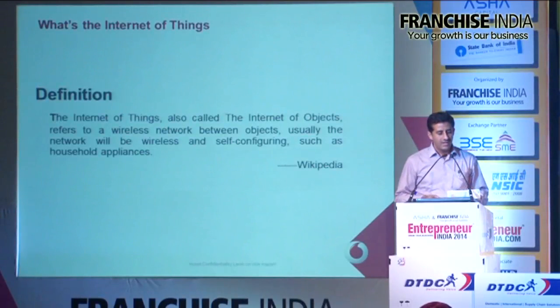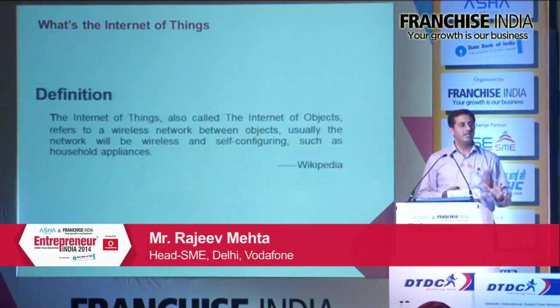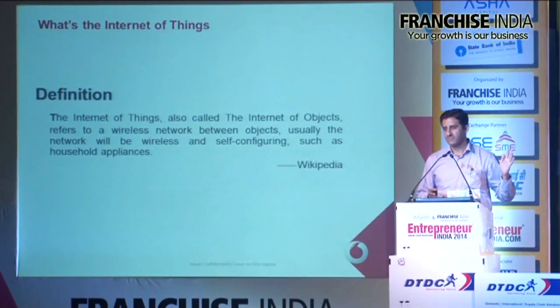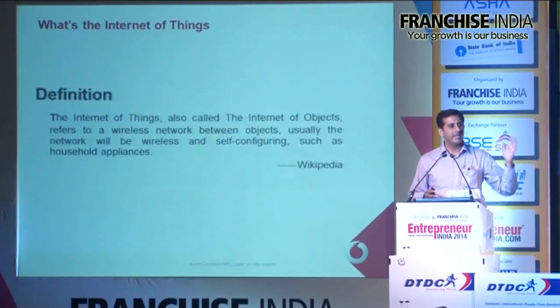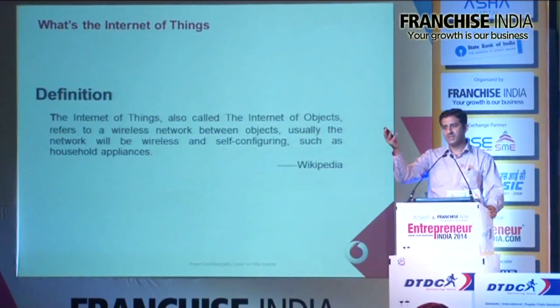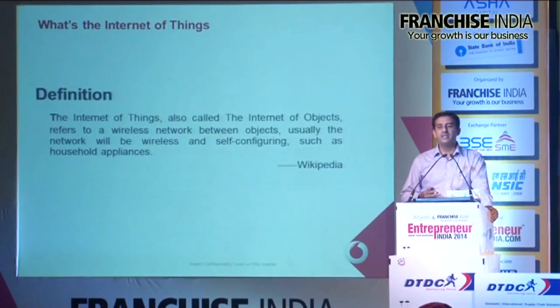There used to be around 500 million connected devices on this planet for approximately 6 billion people in around 2003 - which is a decade ago. Can anybody guess how many devices would be connected today on Internet? There are approximately 6.8 billion people on this planet and there are already more than 10 billion connected devices, which is approximately two to three devices per person.